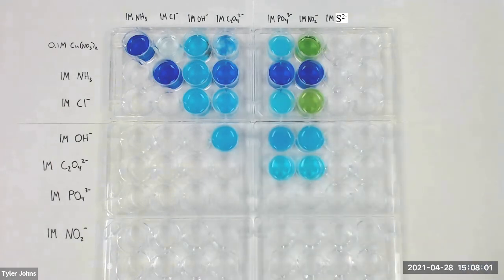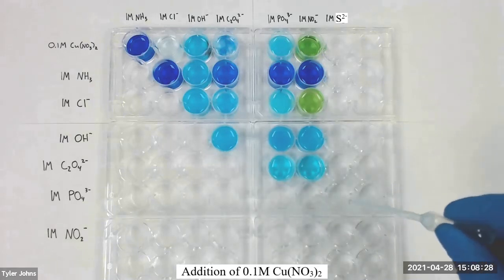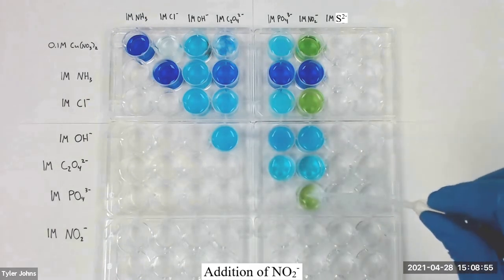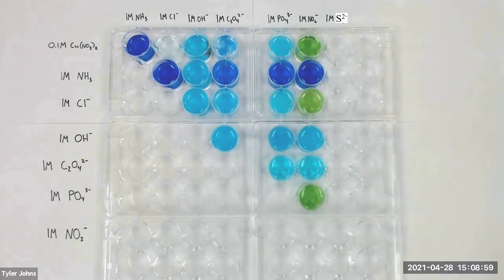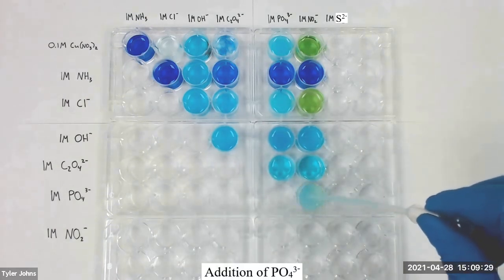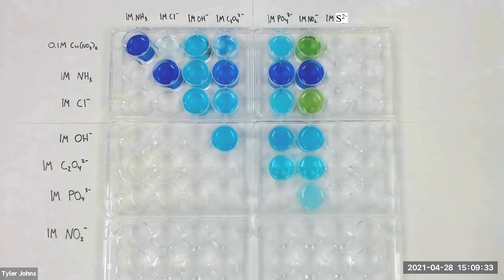We will next perform stability tests for nitrite and sulfide ions using the wells in the seventh column.